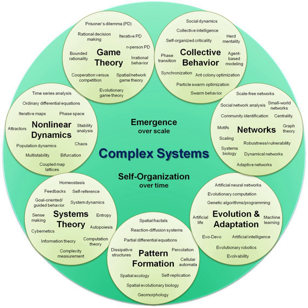Complex systems may be nested: the components of a complex system may themselves be complex systems. For example, an economy is made up of organizations, which are made up of people, which are made up of cells, all of which are complex systems. As well as coupling rules, the dynamic network of a complex system is important. Small-world or scale-free networks, which have many local interactions and a smaller number of inter-area connections, are often employed. Natural complex systems often exhibit such topologies.